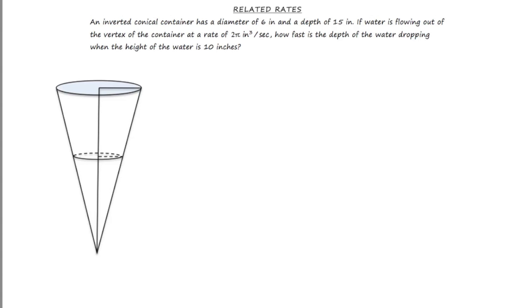An inverted conical container has a diameter of 6 inches - now they're referring to the circle at the top, that's the diameter they're referring to. So let's mark that off, so this here is going to be 6. And they tell us the depth is 15, so the depth would be the height of this conical container.